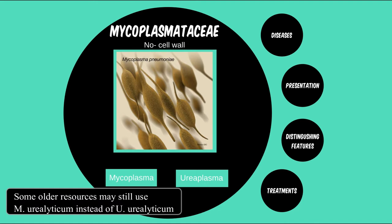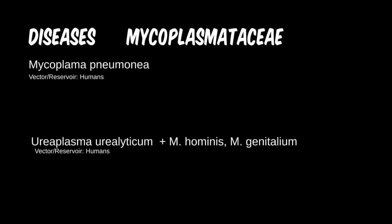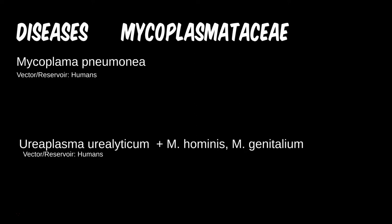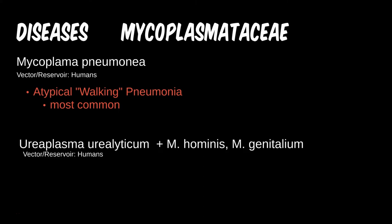In a past module we used the generic term atypical pneumonia to describe certain pneumonia states. This type of pneumonia is also commonly referred to as walking pneumonia. Although it is also associated with Legionella and Chlamydia, which we'll cover in the next module, it was originally coined for mycoplasma. This is in part due to the lingering yet mild respiratory distress it can cause, and also due to the fact that these atypical infections were very difficult to treat and often difficult to diagnose.